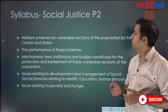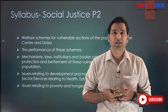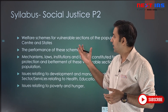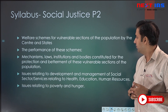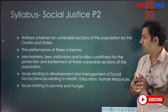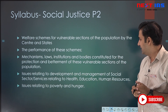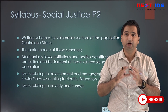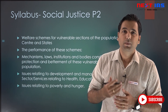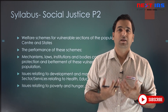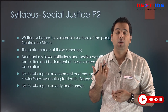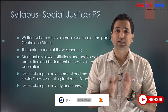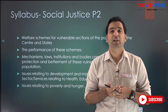The social justice topic is covered under General Studies Paper 2, which includes: welfare schemes for vulnerable sections by the centre and states, the performance of these schemes, mechanisms, laws, and institutions for the protection of vulnerable populations, issues related to health, education, and human resource management, and issues relating to poverty and hunger. Both social issues and social justice pertain to the same concerns of Indian society — vulnerable sections, those needing government assistance, and areas neglected by Indian administration.